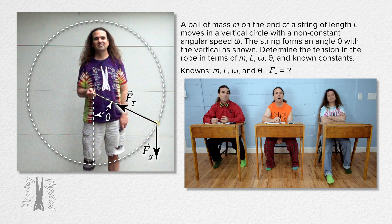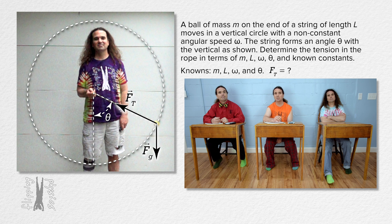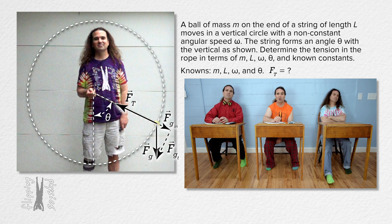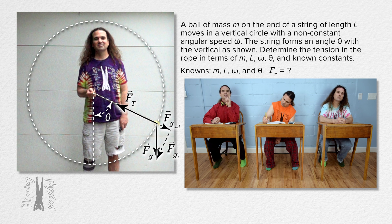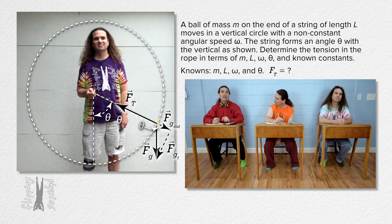We are going to sum the forces in a direction perpendicular to the in-direction, which is the tangential direction, because it is tangent to the circle and in the direction of the motion of the ball. So we need to break forces into components in the in and tangential directions. The force of tension is always pointed in the in-direction, so we only need to break the force of gravity into components. The force of gravity component in the in-direction is actually directed outward at that point — that is the outward component of the force of gravity. You can see that the outward component is along the radius and the force of gravity is straight down, so the angle theta in the vector addition triangle is the same angle theta as shown in the problem.